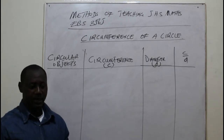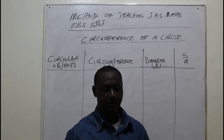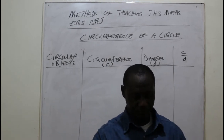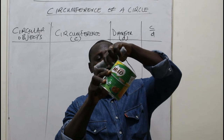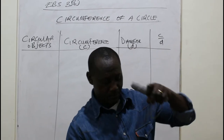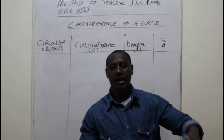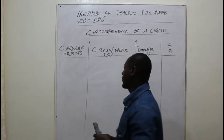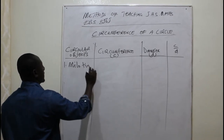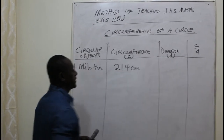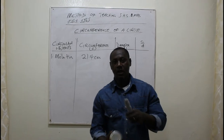I am now going to take the measurements and record the circumference for each object. I will take the measurement for the first one, which is the milk tin. I measure from the ruler, and I am getting 21.4 cm. So the first item — the milk tin — gives a circumference of 21.4 cm.